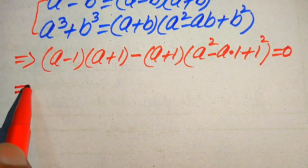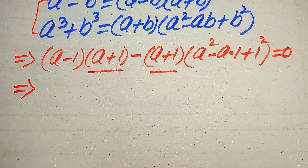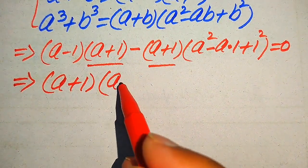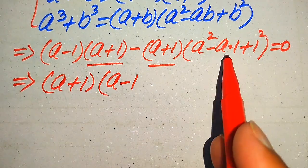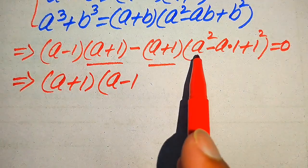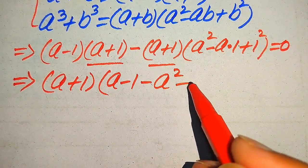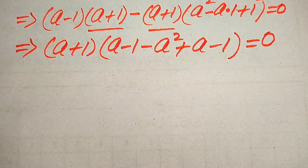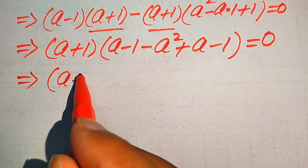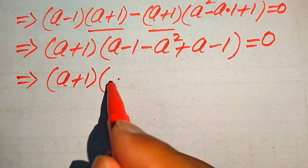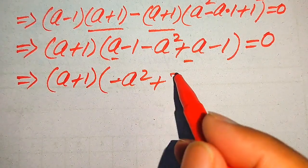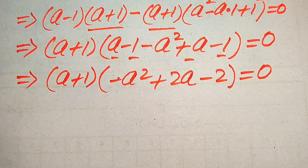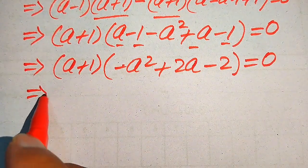Both terms contain the common factor (a plus 1), so we take it out. The remaining values are (a minus 1) from the first factor, and from the second factor we get minus a squared plus a minus a squared plus one, which simplifies to minus a squared plus two a minus one. Wait — combining carefully: (a plus 1) times [(a minus 1) + (minus a squared plus a minus 1)] equals zero, giving (a plus 1)(minus a squared plus two a minus two) equals zero.